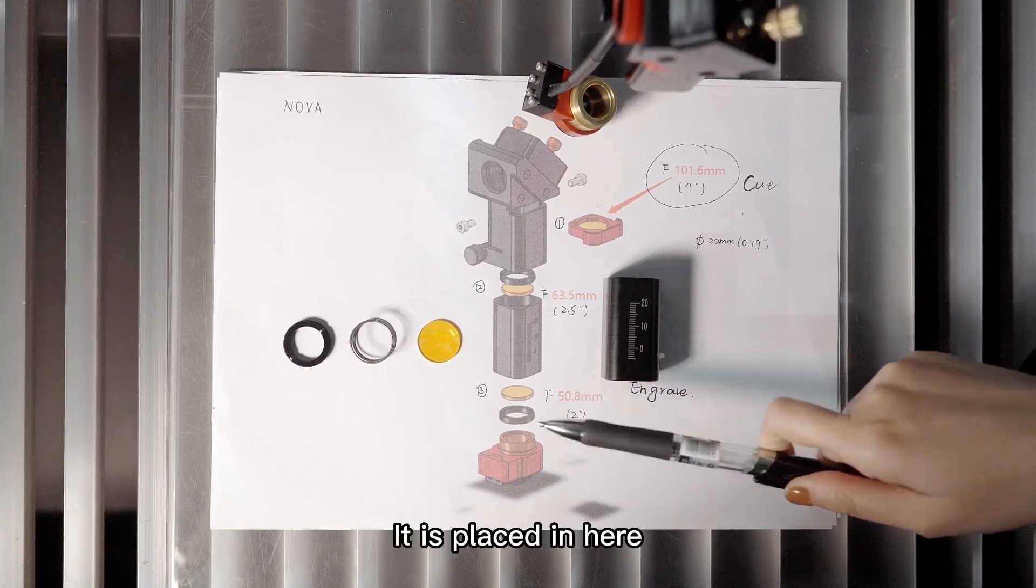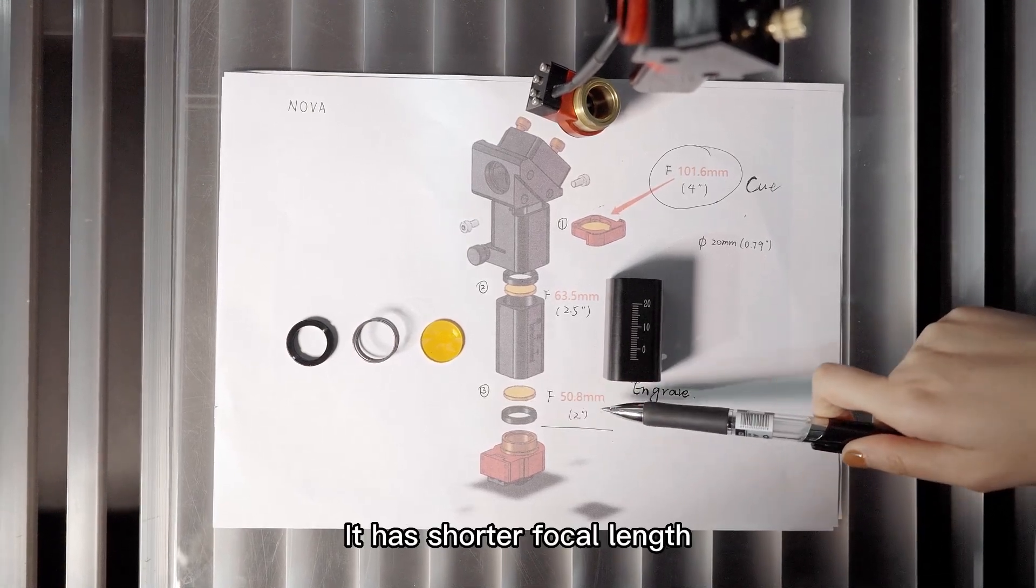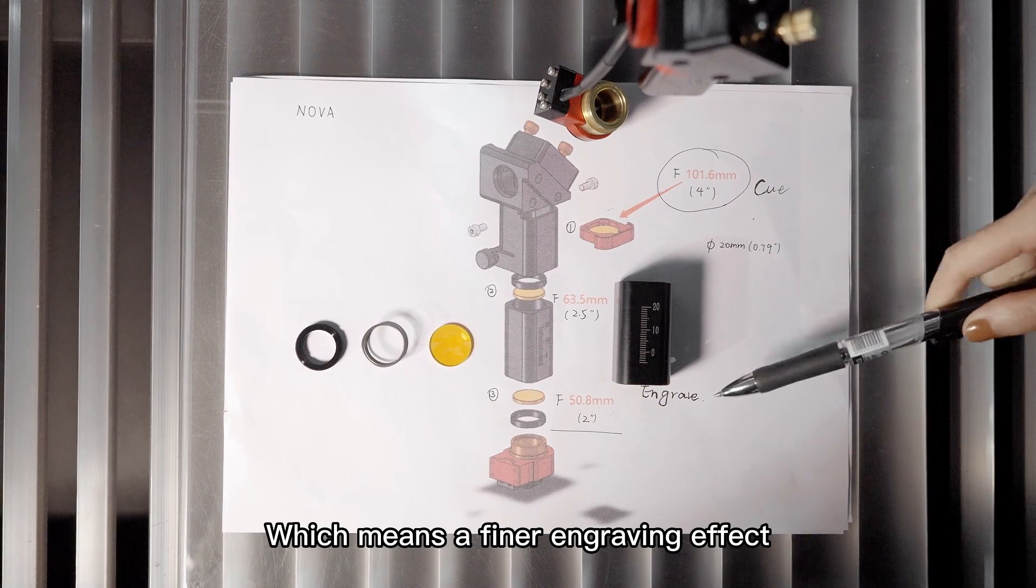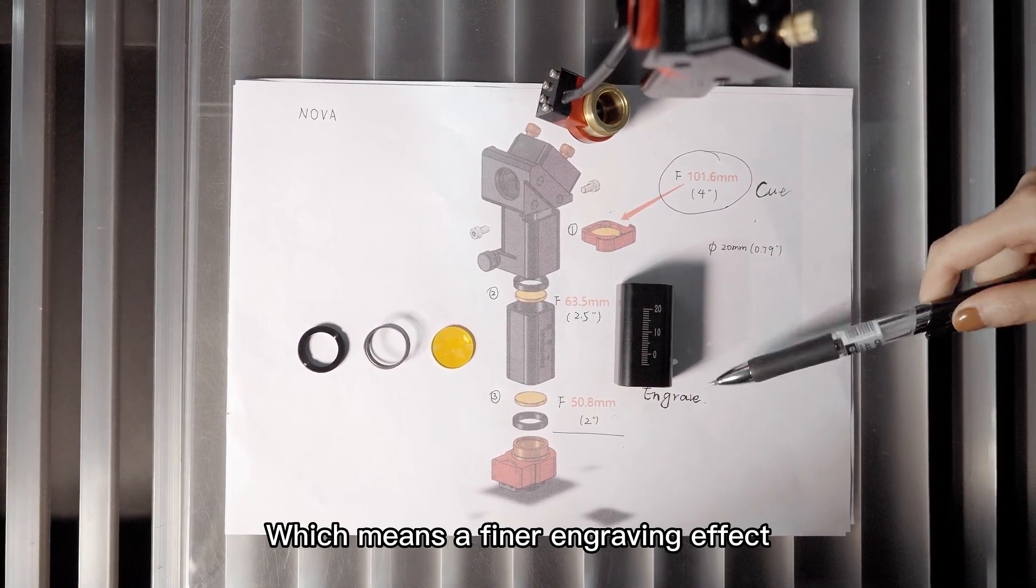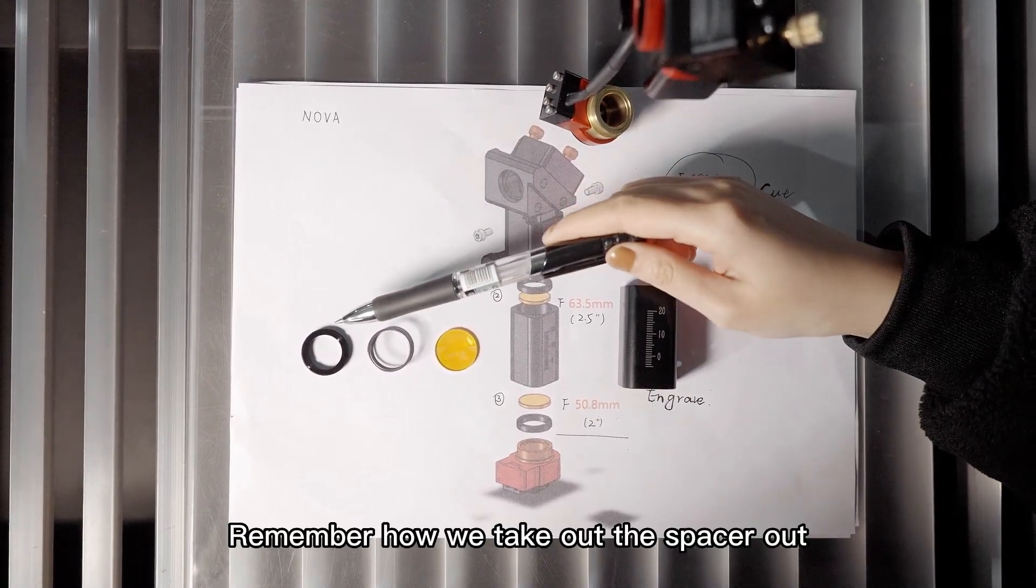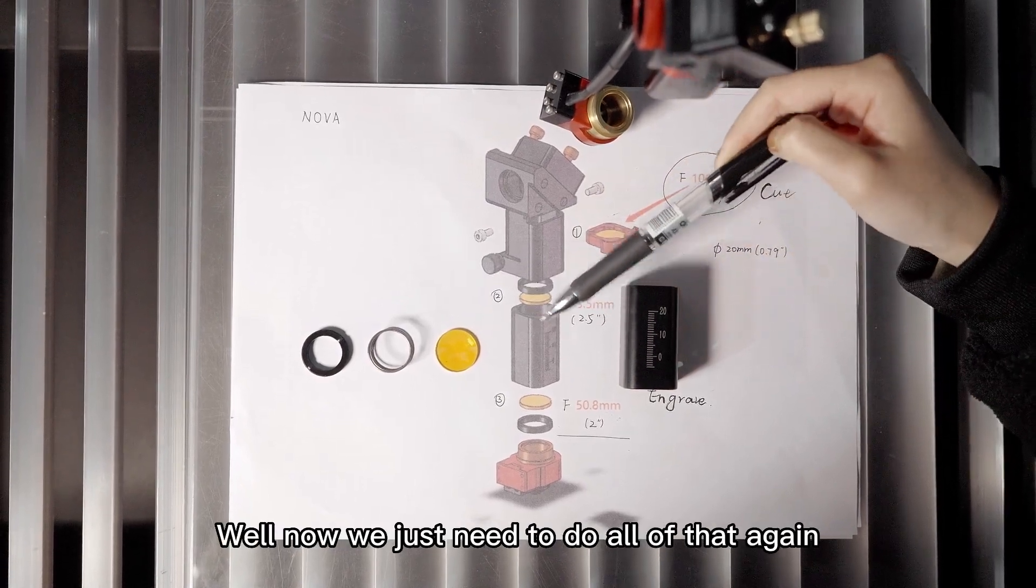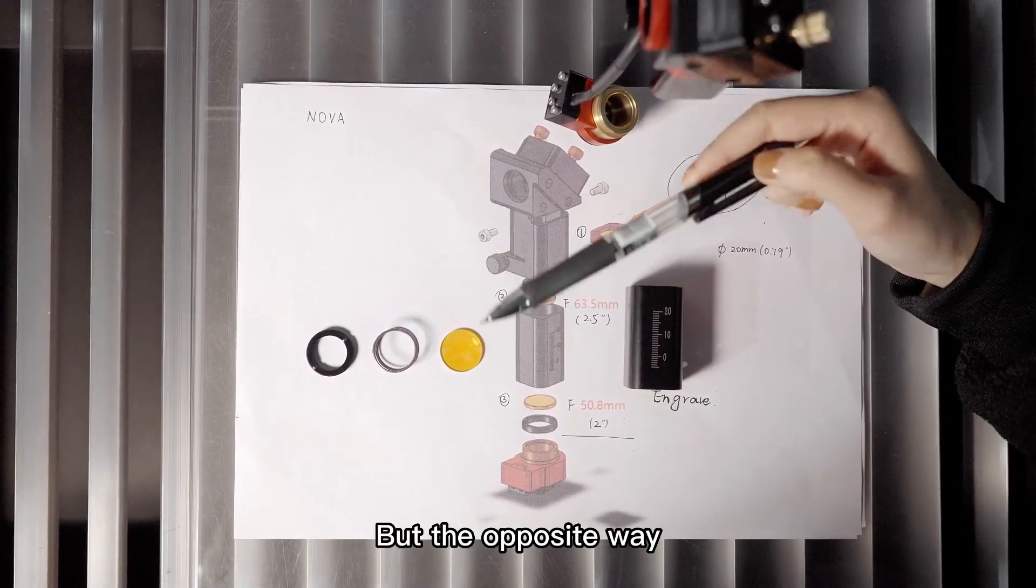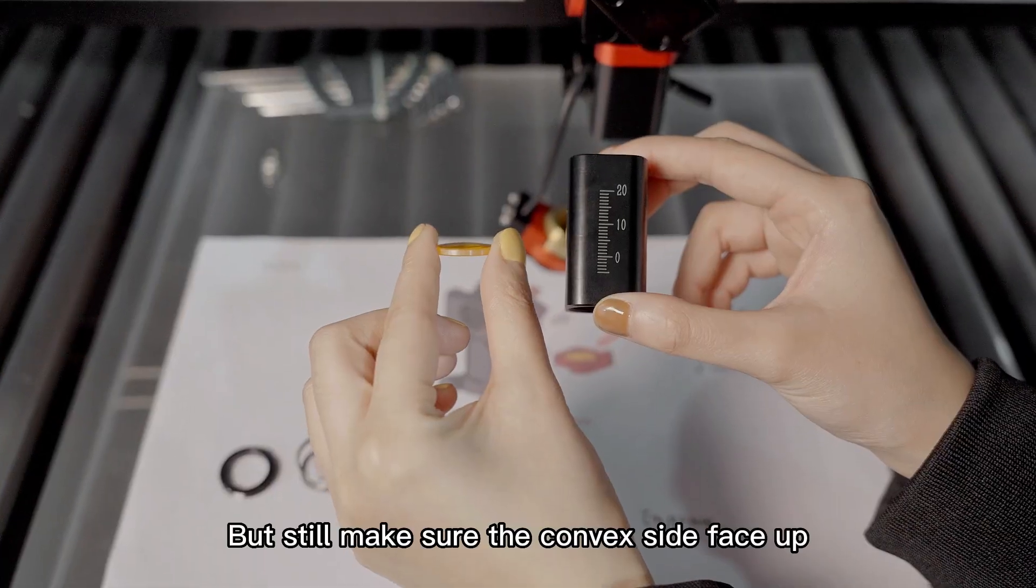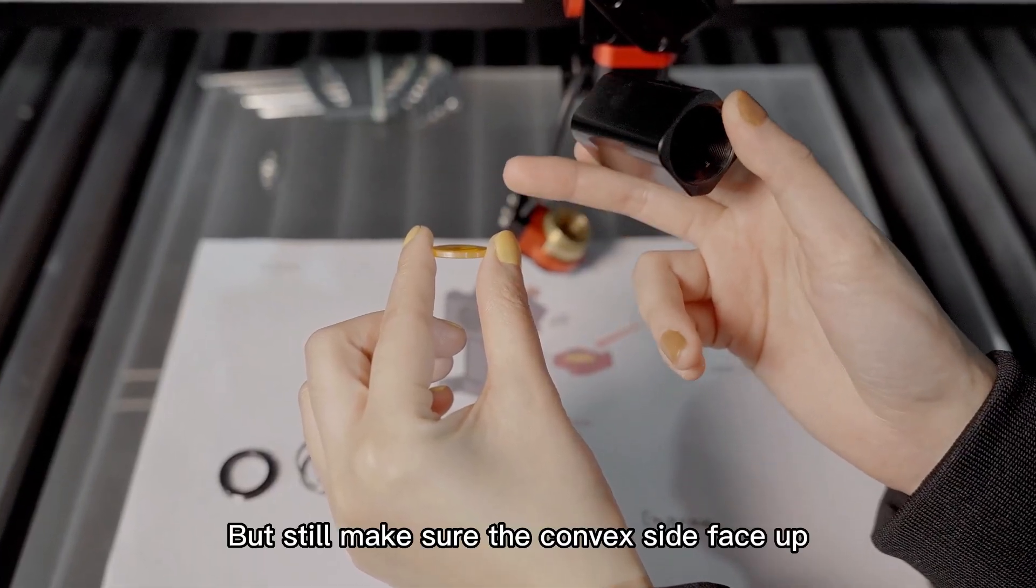As for the lower one, it is placed in here. It has shorter focal length, which means finer engraving effect. Remember how we take out the spacer out, and then the spring, and then the lens? Well, now we just need to do all of that again, but the opposite way. But still, make sure the convex side face up.